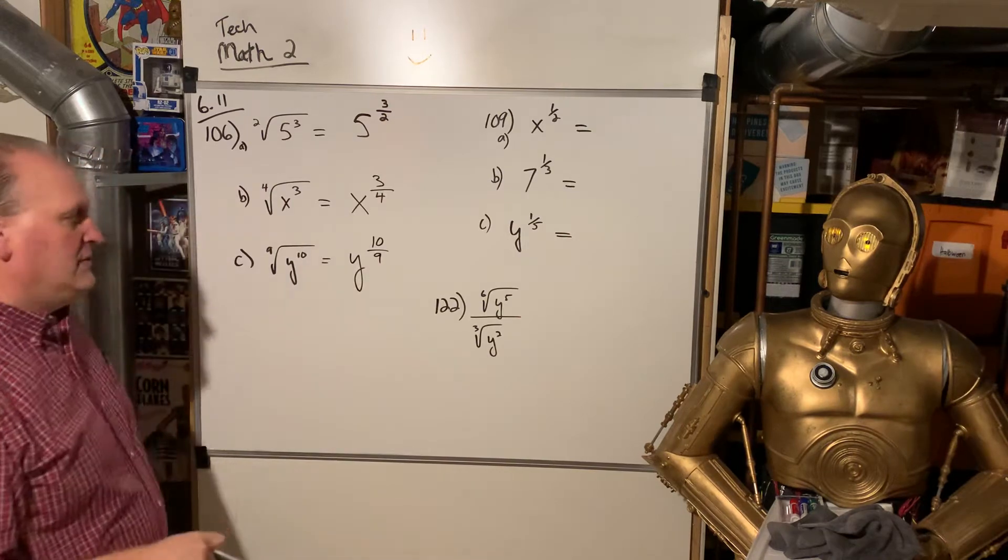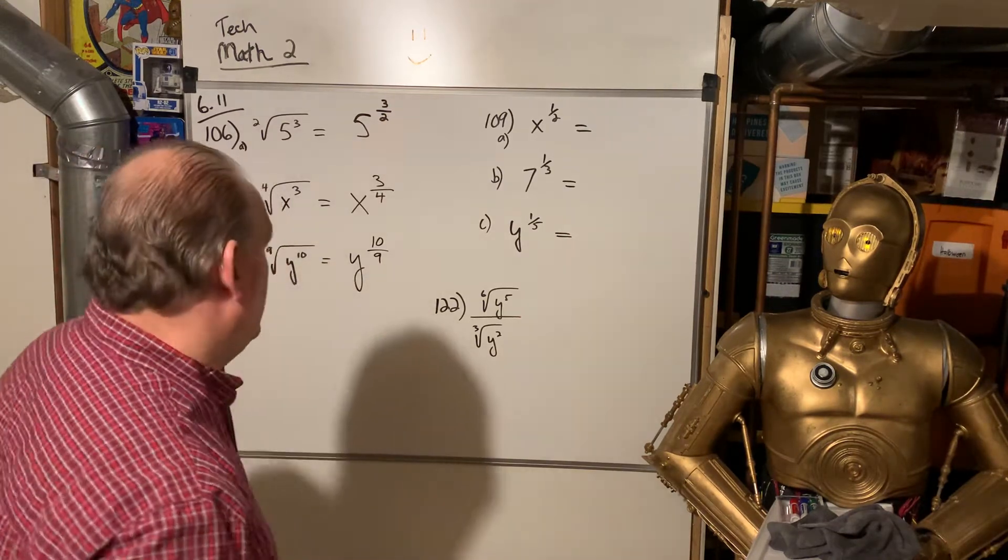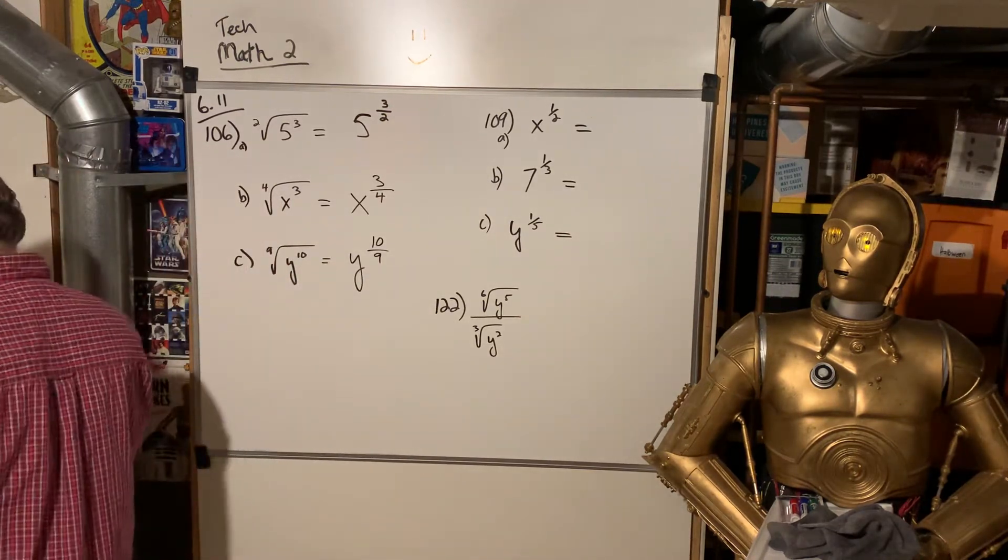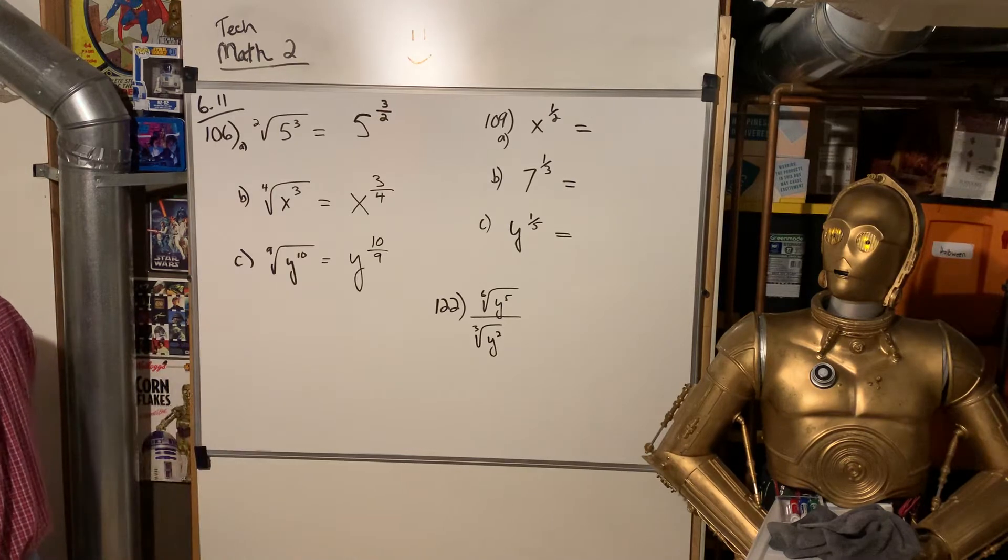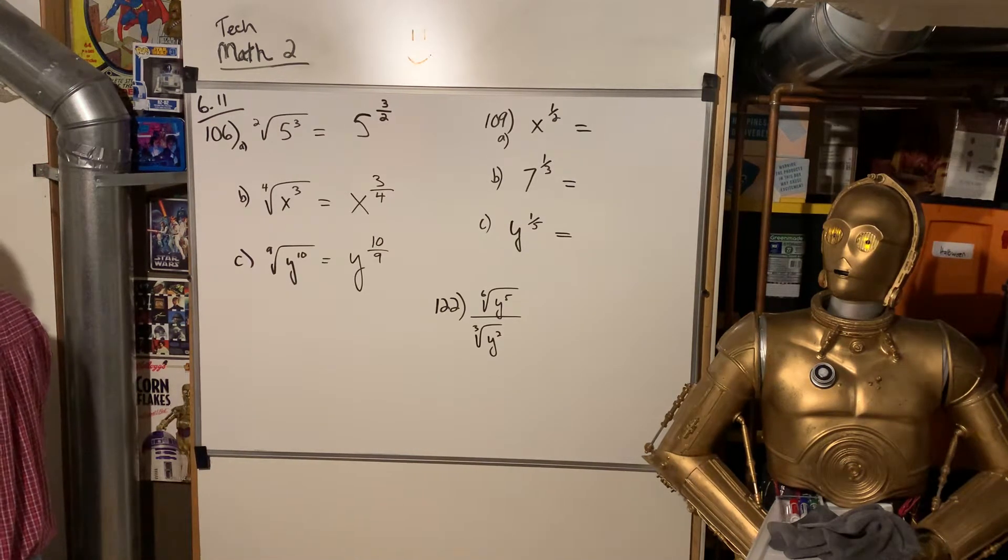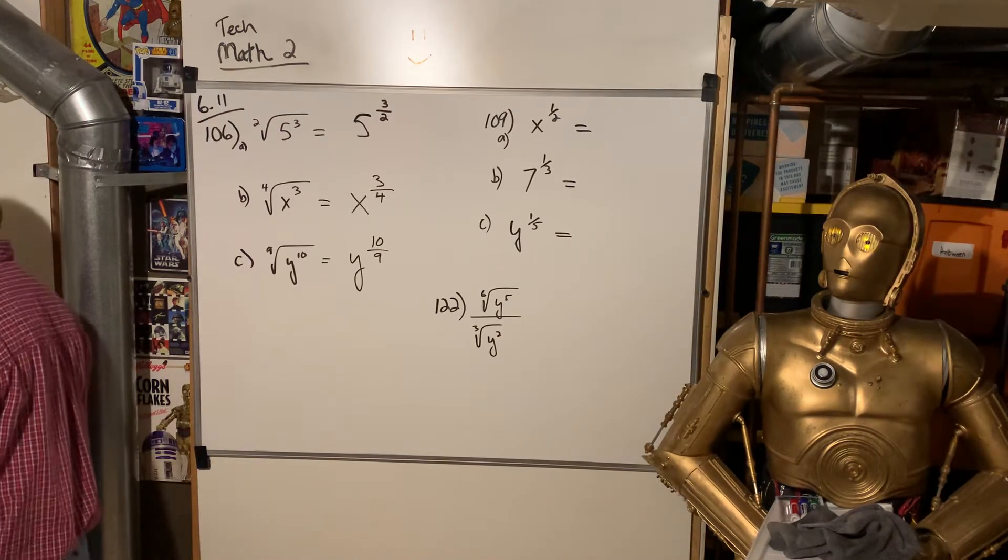And don't write that as a mixed number. Don't write it as 1 and 1 9th. Just leave it as 10 9ths. Okie dokie, artichokey. All right, lovely.